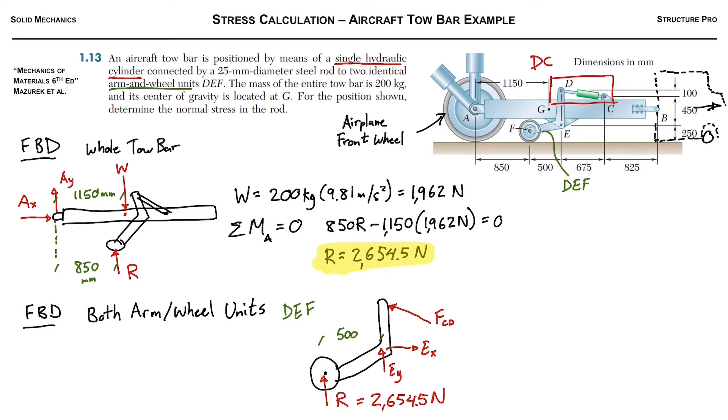And then we'll try and get the moment arms. So that one is 500 millimeters from point E, and it looks like FCD is 550 millimeters just looking at the figure there.